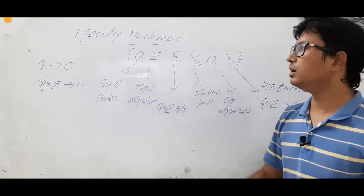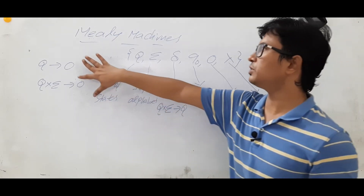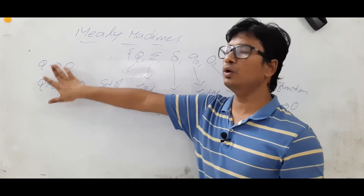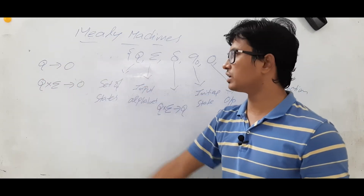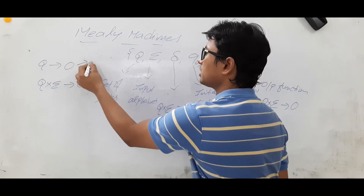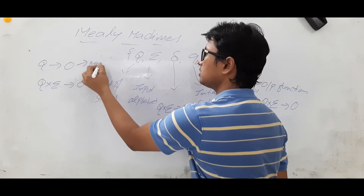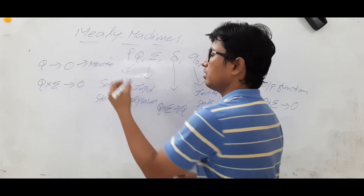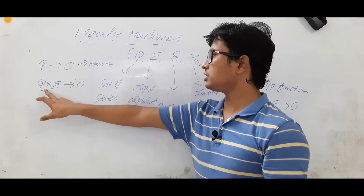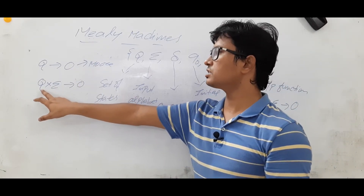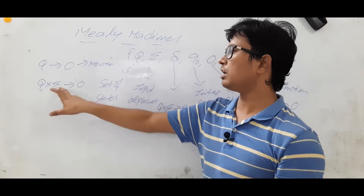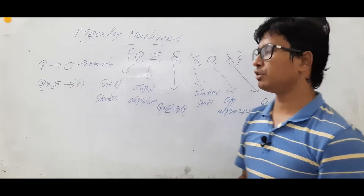The difference between a Mealy machine and a Moore machine is only in the output function. In a Moore machine, for each state you have an output. Whereas in a Mealy machine, for each state on an input alphabet you have an output.